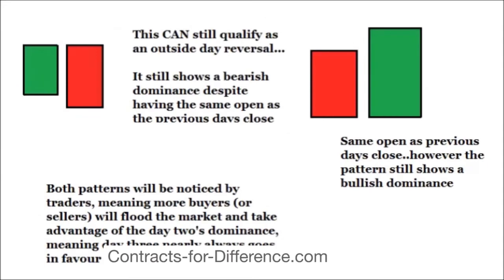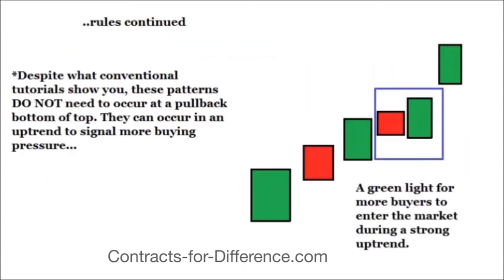On the green day, the base of the green candle is the open — it goes up and closes at the top. The next day, the top of the red candle is where it opens — exactly the same level — but then it drops and closes below the previous day's open. That still shows dominance, so it is still a valid pattern and we would trade it.